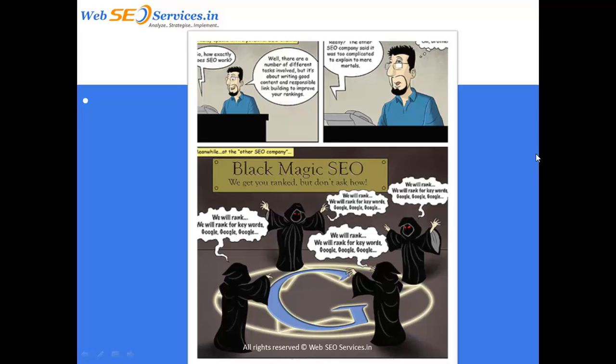Hello everyone. Up till now, all the techniques — both on-page and off-page link building techniques — everything we have discussed is the legal way of doing SEO, also called white hat SEO. Other than that, there are some techniques which Google and search engines do not approve, used to get rankings immediately. These are called black hat SEO.